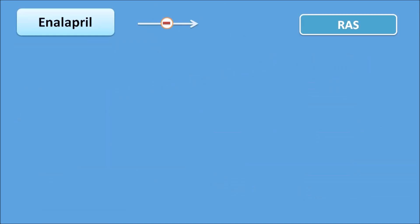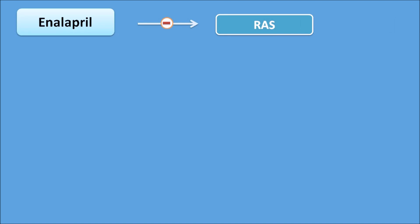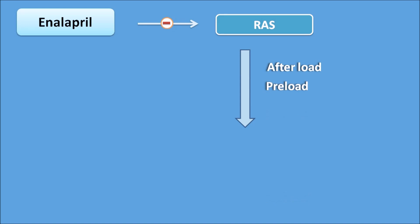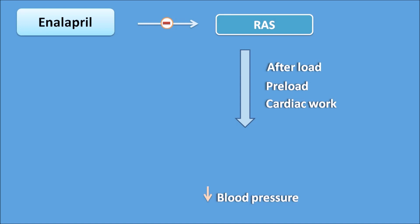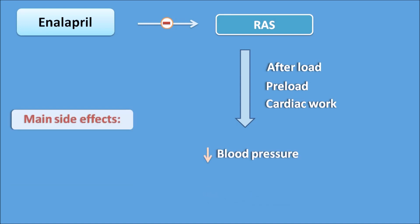Enalapril inhibits the renin-angiotensin system, thereby decreasing afterload, decreasing preload, and decreasing cardiac work. Through all of these mechanisms, blood pressure is decreased by enalapril.